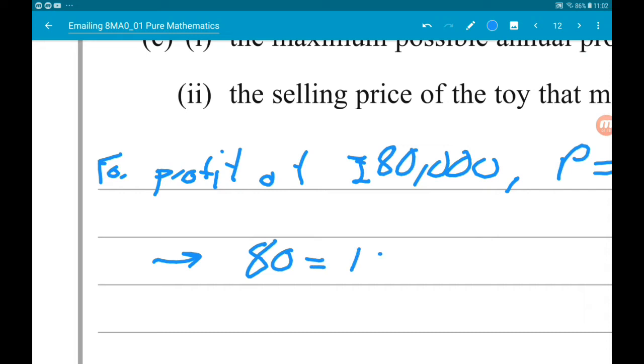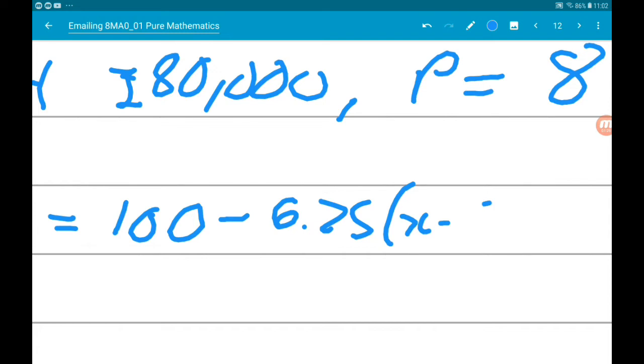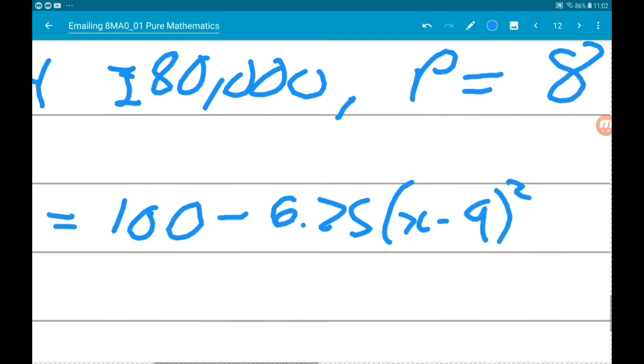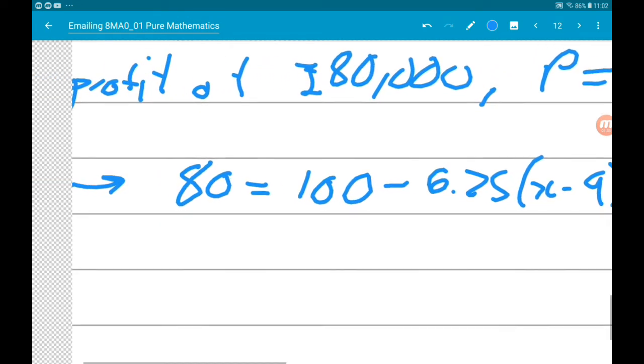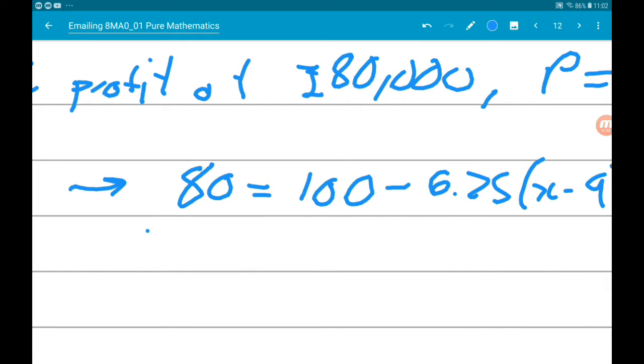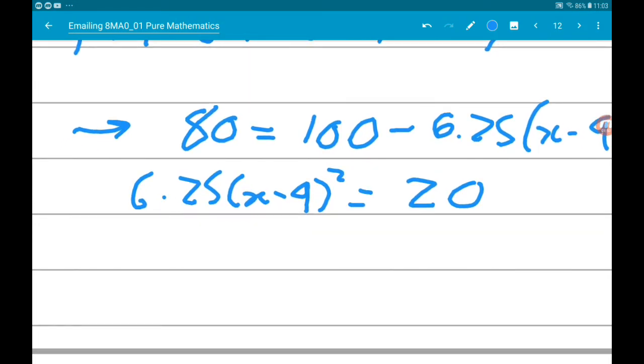80 is equal to 100 minus 6.25 x minus 9 squared. Now we need to solve this for x. So if we add the 6.25 term and subtract the 80, we get 6.25 x minus 9 squared is equal to 20. So we divide by 6.25, and then we get x minus 9 squared is equal to 3.2.